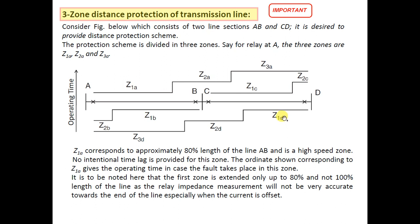Z1A corresponds to 80% of the length of line A-B — it will cover up to 80% of the line length, and it is the high-speed zone with the least operating time. The first zone as discussed does not provide protection for the full 100% length of the line; generally it covers up to 80%.